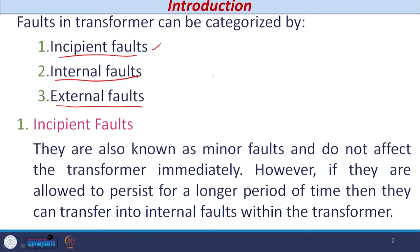Let us start our discussion with the first type, incipient faults. Incipient faults are also known as minor faults. If we wish to detect this fault, we have to use a separate device. Whenever such a fault is detected, there is no immediate need to trip the transformer. But if this type of fault persists for a longer duration, it may convert into actual electrical or internal faults of the transformer, so there is a need to detect such faults.